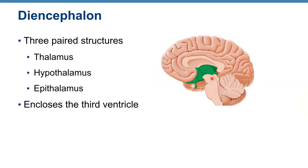Now moving to the diencephalon, shown here in green. The diencephalon has three paired structures: thalamus, hypothalamus, and epithalamus. It encloses the third ventricle. In a mid-sagittal cross-section of the brain, the third ventricle is located between the two thalami.